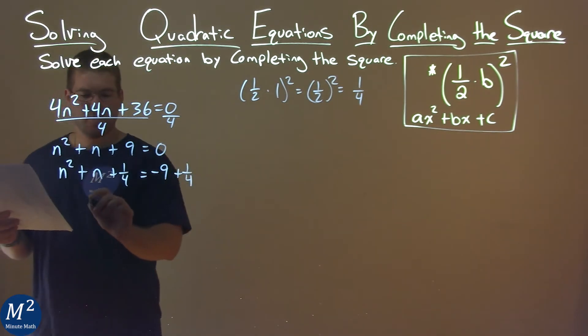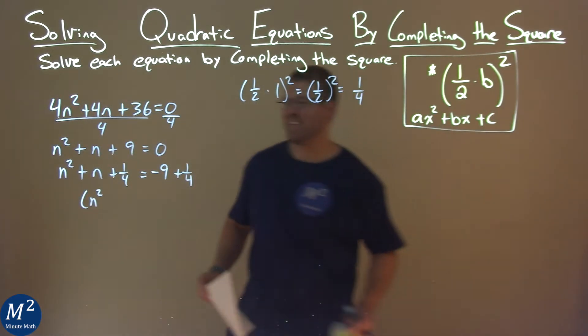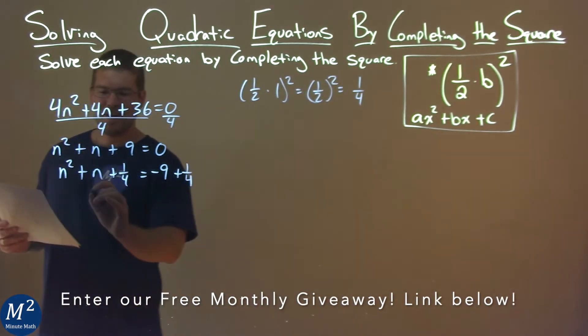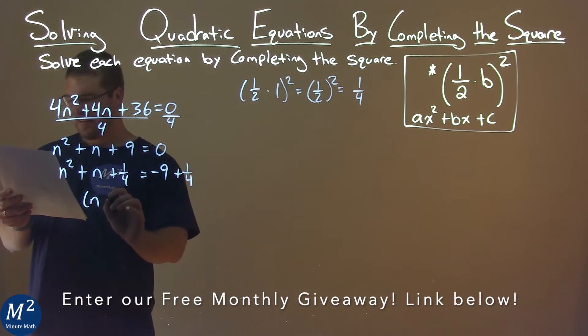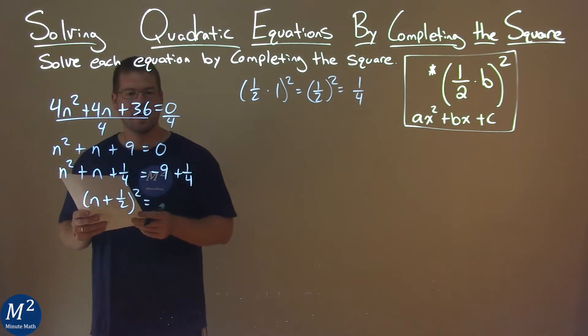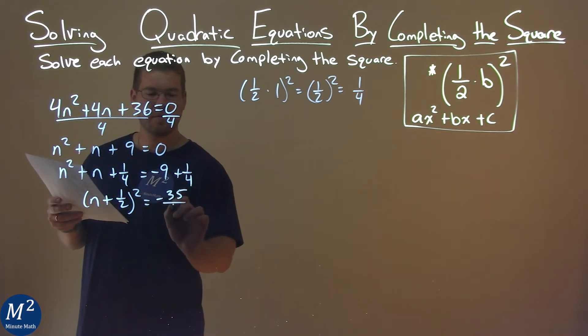The left hand side has a perfect square. Well, it's not n squared, but that being a perfect square, we have n plus one half here, all squared. And the right hand side, negative 9 plus one fourth, is negative 35 fourths.